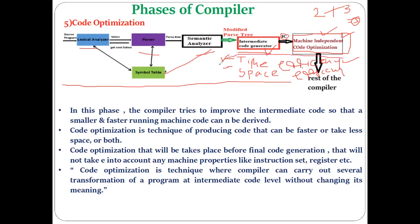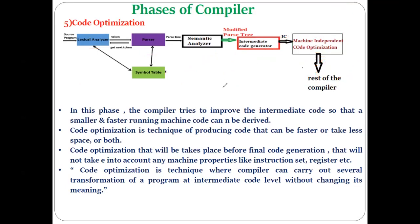Code optimization does not happen compulsorily every time — it depends on whether optimization is required. In this phase, the compiler tries to improve the intermediate code so that smaller and faster-running machine code can be derived. If you have written a program to find even and odd numbers, after optimization it should still find even and odd numbers. Changes are only made to improve speed and reduce space, without affecting the final output.